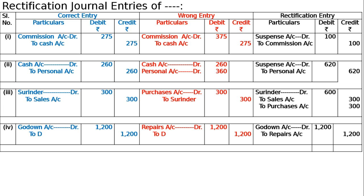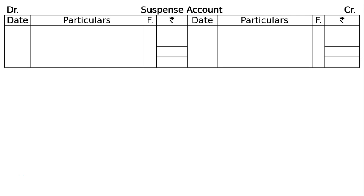The rectification journal entries total ₹2520 on both debit and credit columns, and this is the final answer for the journal. After rectification journal entries are passed, we have to prepare a suspense account. The question asks us to prepare a suspense account, and since there is a difference of ₹720 in the trial balance transferred to the credit side, write in the suspense account on the credit side: by balance brought down ₹720. Then read the rectification entries and post accordingly.